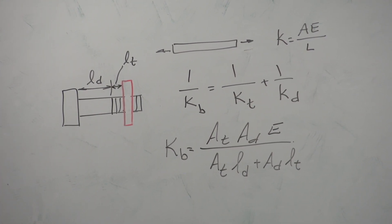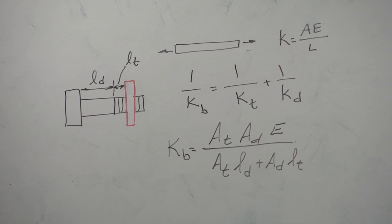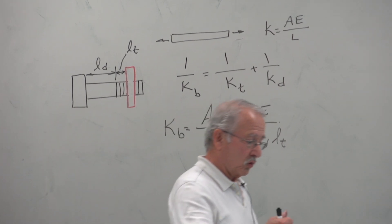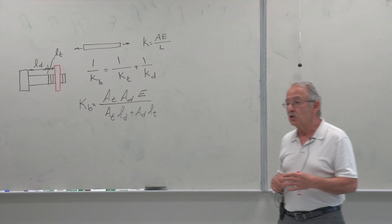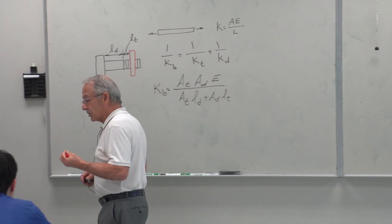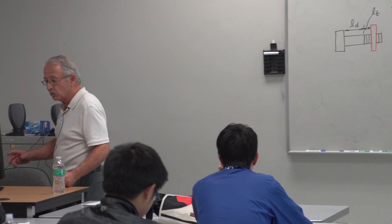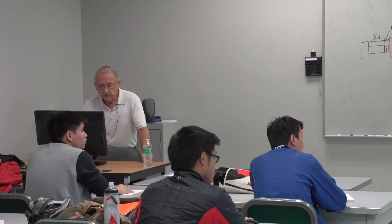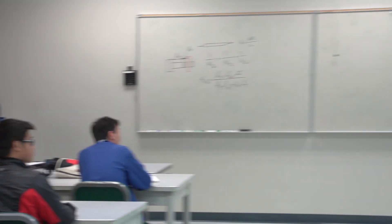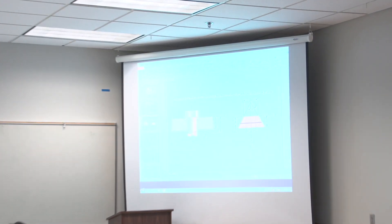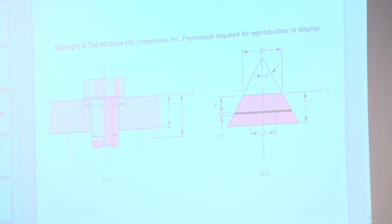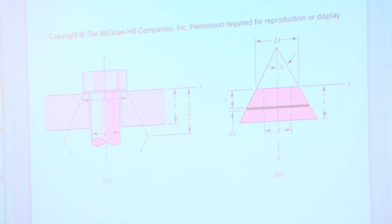That's where we were last time. In order to analyze the stresses in the bolt or the member once we tighten the bolt, we need to consider not only the stiffness of the bolt, but also that of the member. The stiffness of the member is a little more complicated, because in the member the area under compression does not remain constant.